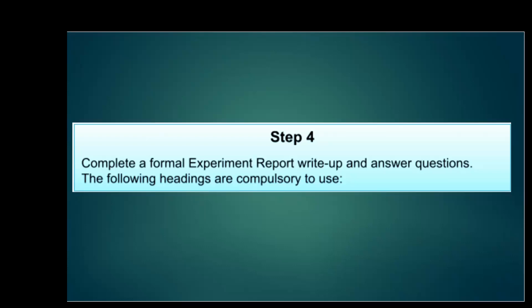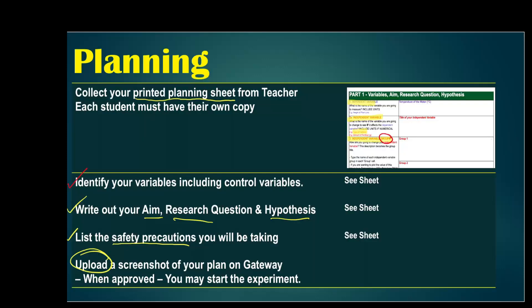Once you've analyzed your data, you're on the home run. You simply have to fill out the experimental report, answer the questions, and submit. You've already done quite a bit of it on your planning document — in fact, a large portion of what's on your report you have already done and submitted for checking, and you just have to type it out from your handwritten notes.